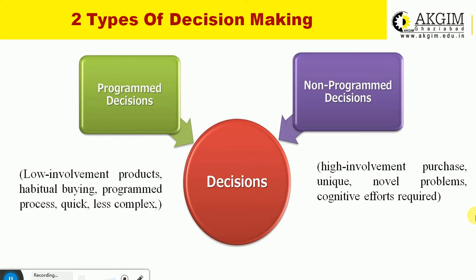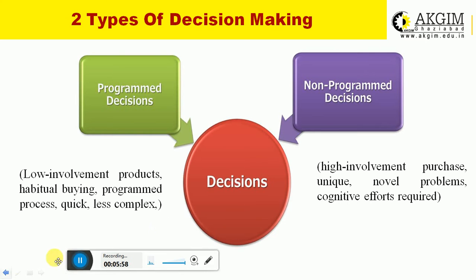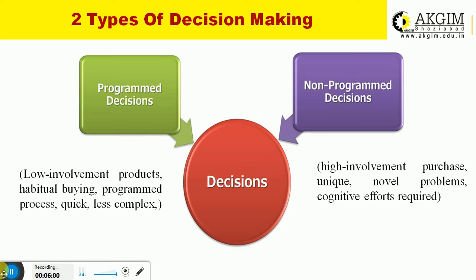Non-programmed decisions apply to problems that arise suddenly and are unique in nature. As the problem is sudden and novel, it is complex and requires a lot of information gathering. With respect to marketing, these are decisions related to infrequent purchases, specialty goods, or emergency goods — these are high-involvement product purchases where the perceived risk is also high. Examples include buying a laptop, an automobile, or investing in real estate.